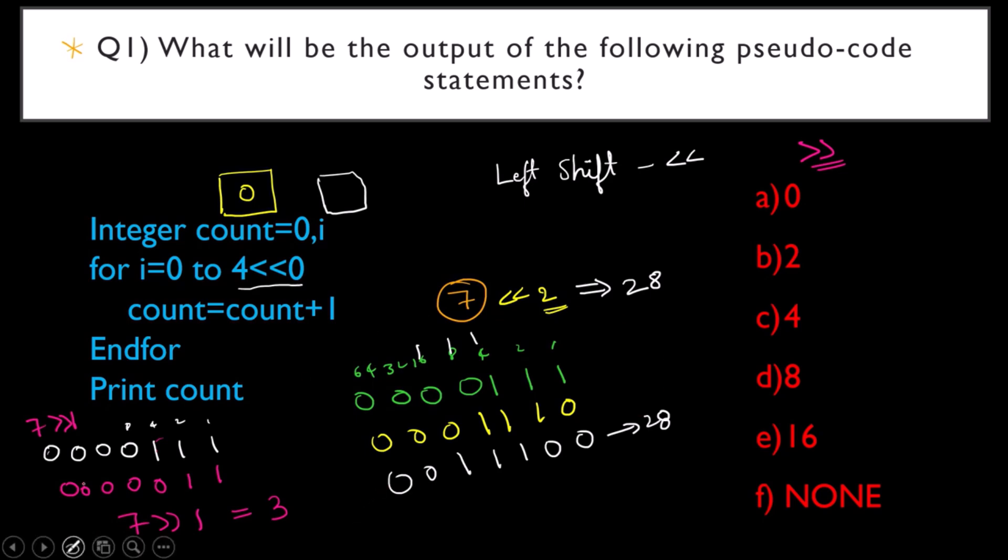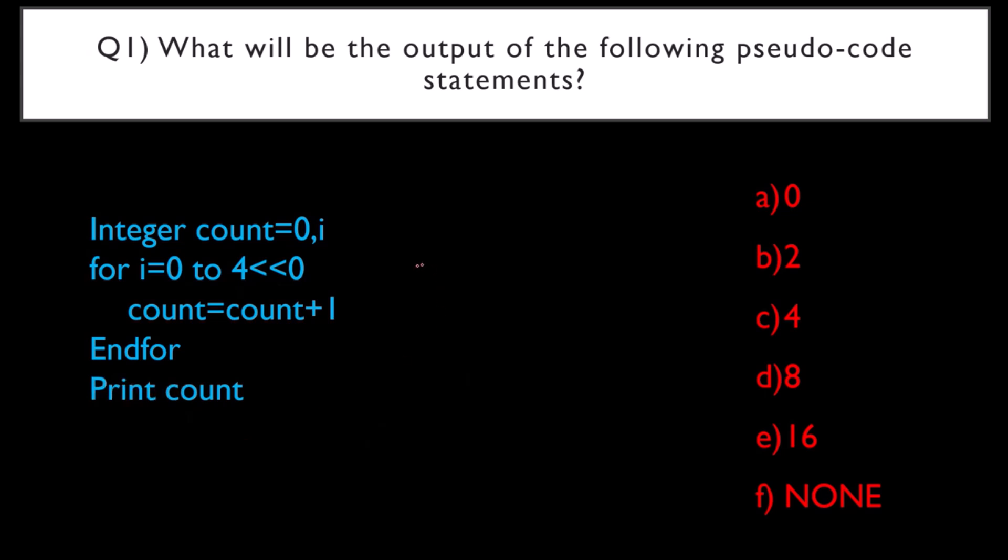In generalization, when I left shifted 7 two times, I got 28. This means that left shifting two times is like multiplying by 2 two times. 7 into 2, what is the answer? 14. Again, if you multiply this by 2, what is the answer? 28. This is it.